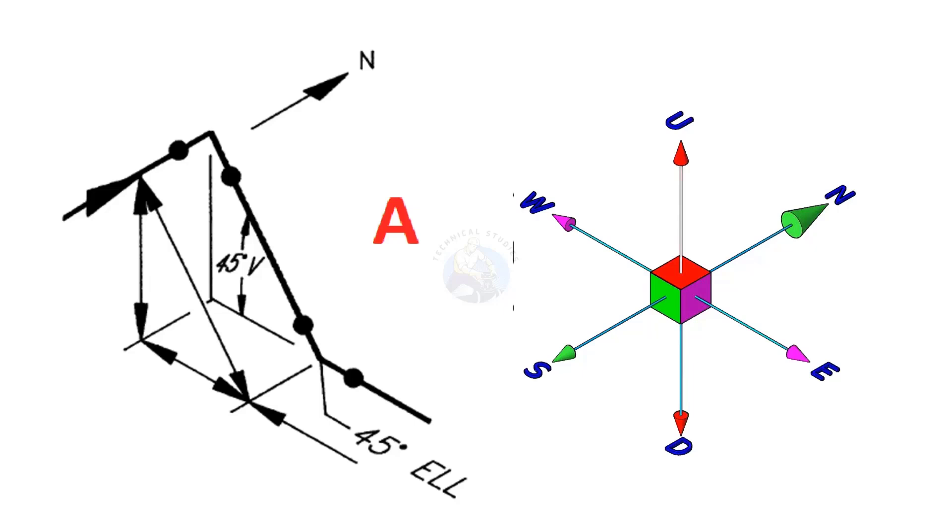Let us start with the first example. See the north direction of the drawing. Pipe goes from south to north.